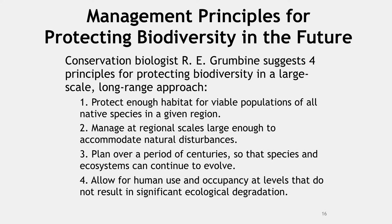Conservation biologist R.E. Grumbine has reviewed laws such as the Endangered Species Act and noted that the best approach to protecting biodiversity must be performed over long periods of time and on a large scale. His approach includes protecting a sufficient size of habitat so that it is viable for all native species in a given region, managing resources on a large scale so that natural disturbances will not endanger entire protected species, planning over comparative centuries so that both the species and its ecosystem can evolve, and allowing for human use and occupancy in ways that do not result in significant ecological degradation.